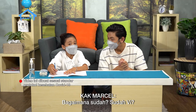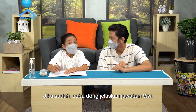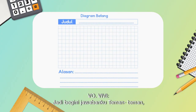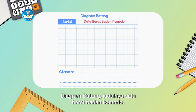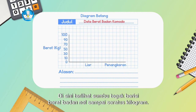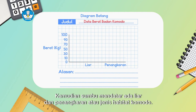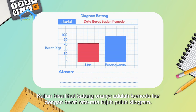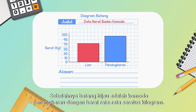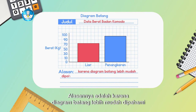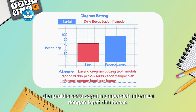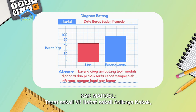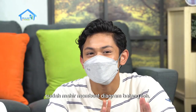How is it? Done, Fi? Please explain your answer. The bar diagram is titled 'Data on Komodo Weight.' The vertical axis shows body weight from 0–100 kg. The horizontal axis shows wild and captive habitat types. The orange bar is the wild Komodo with an average weight of 70 kg; next to it the green bar is the captive Komodo with an average weight of 100 kg. The reason is that a bar diagram is easier to understand, practical, and quickly provides accurate information. Exactly right! Well done — already skilled at making bar diagrams.